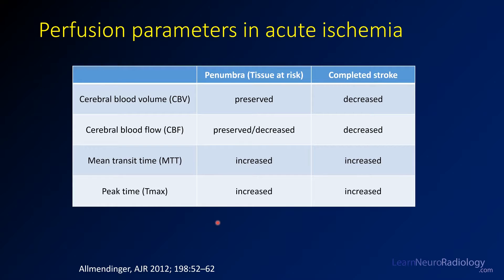When looking at perfusion parameters in stroke, penumbra is tissue that's not dead yet, whereas completed stroke is thought to be completely dead. You have relative preservation of cerebral blood volume in penumbra, with possible preservation or slight decrease in blood flow, but transit times will be increased. Once the stroke is completed, you tend to have decreases in both flow and blood volume.